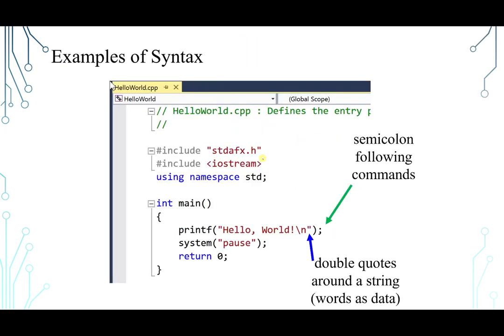Examples of syntax: having a semicolon at the end of each statement in C++, or when you print something, you must have it in double quotes to appear as it is.